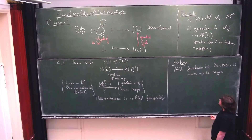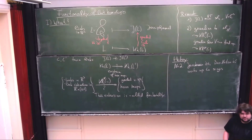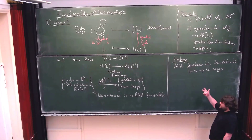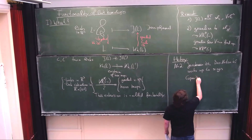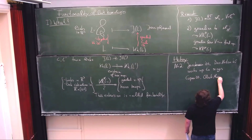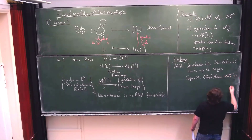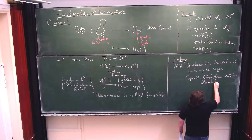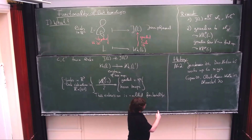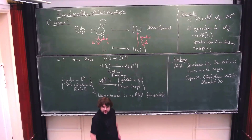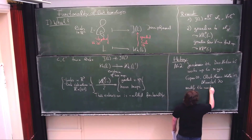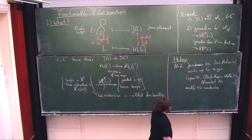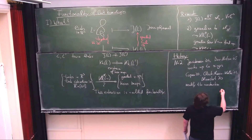Since signs were a problem, the idea was to modify the construction a bit by adding in some additional signs. This was done in different ways by Clark-Morrison-Walker, Caprau, and Blanchet. They each fixed the sign problem differently — the first two by adding combinatorial structure onto cobordisms, the last by really modifying the TQFT that lies behind everything. Still they get the same homology groups, and obtain functoriality.